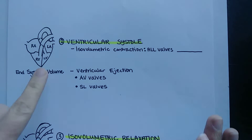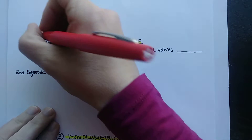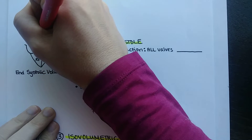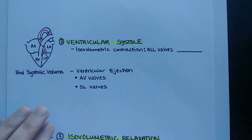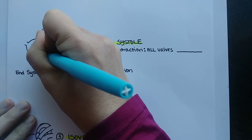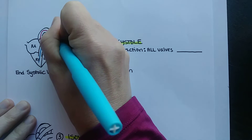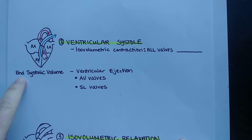During ventricular systole, blood gets pumped out. Pressure builds rapidly in the left ventricle until blood is ejected through the semilunar valve and into the aorta — shown with the red pen for oxygenated blood. At the same time, using the blue pen, deoxygenated blood is ejected from the right ventricle through the pulmonary semilunar valve to the lungs. Whatever gets pumped out is called stroke volume, and whatever remains is called end systolic volume — the volume at the end of systole.